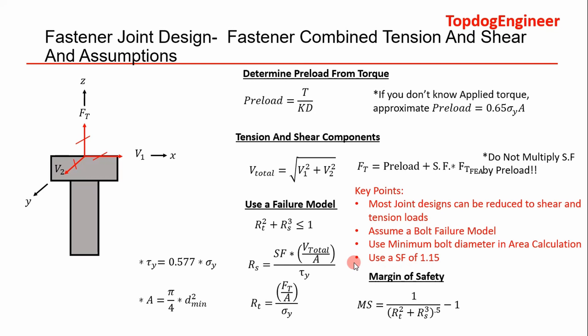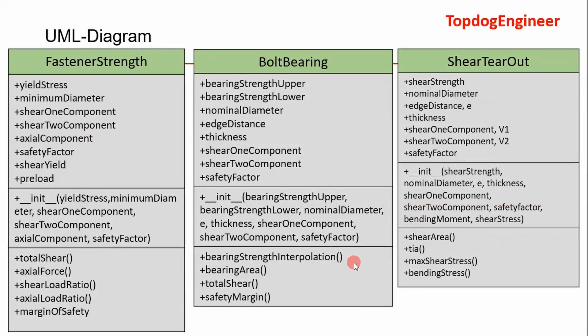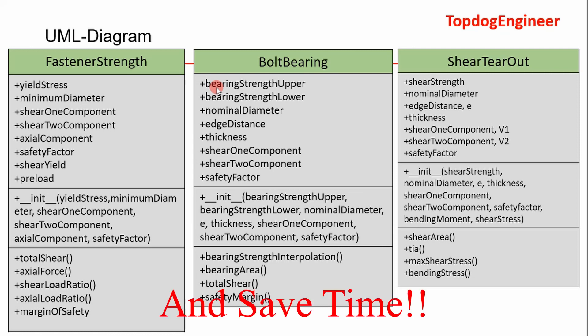That's the workflow to do this by hand. We're going to combine it into an object-oriented Python program — here's the UML diagram, which I'll show in the next video. We'll cover combined tension and shear for the fastener, bolt bearing, and shear tearout. This introduction was designed to be as simple as possible using conservative assumptions you can apply in practice. You can make calculations as complex and exact as you want, but it's better to be conservative as a designer. Hope you got something out of this — see you in the next video. Adios.